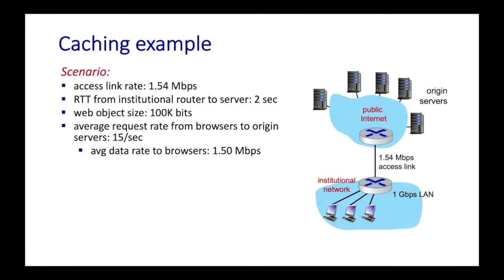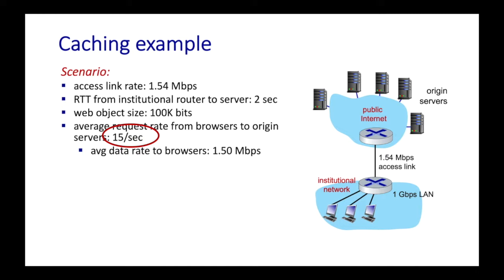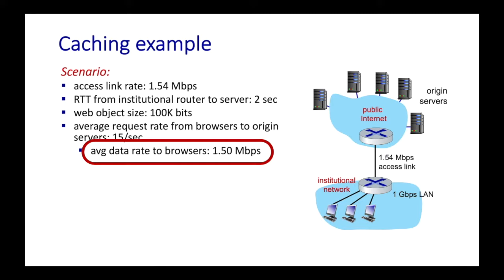Now let's quantify these performance benefits. We've got an institutional network and the public internet where origin servers live. We have an access link running at 1.544 megabits per second — that's the bottleneck link. The RTT from the institutional router to an origin server is about two seconds. A web object has a size of 100k bits. The average request rate from browsers in the institutional network out to origin servers is 15 requests per second, meaning data flows in at 1.5 megabits per second on average.